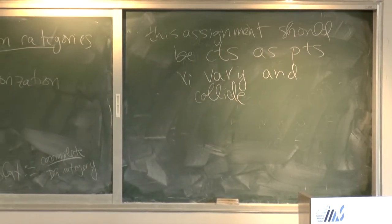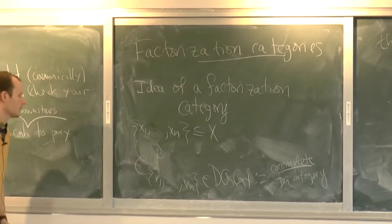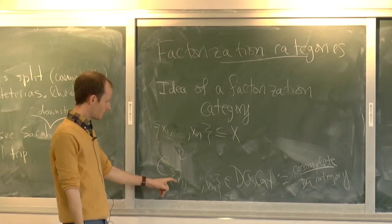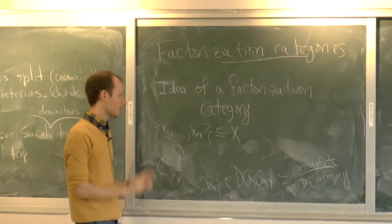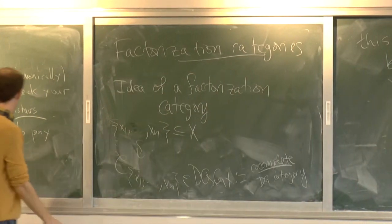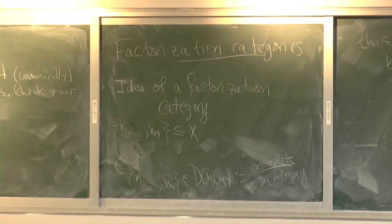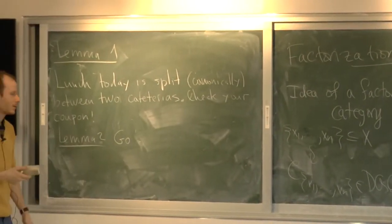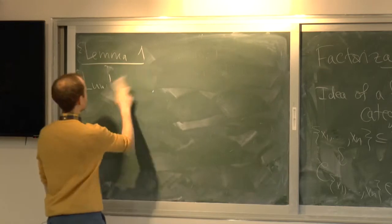The example you're supposed to have in mind—it's intentionally very vague at this point—is: take points x_1 up to x_n on the curve, take the fiber of the Affine Grassmannian there, the corresponding product, and take D-modules on there. So that will eventually be something that satisfies this. Is that the only example? No, we have all of these. All of the examples we gave yesterday will produce versions of this.